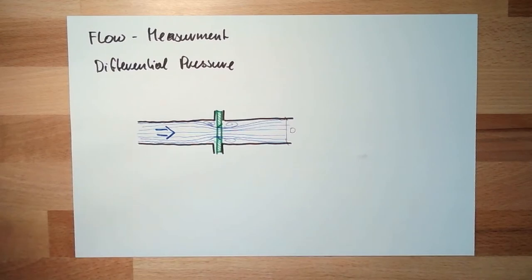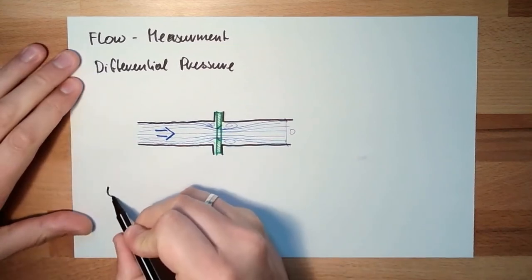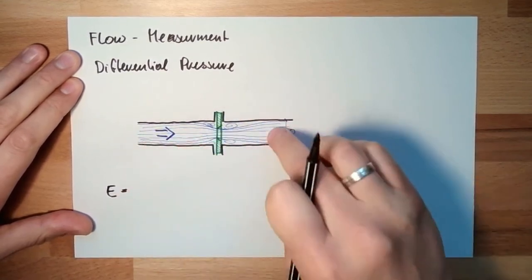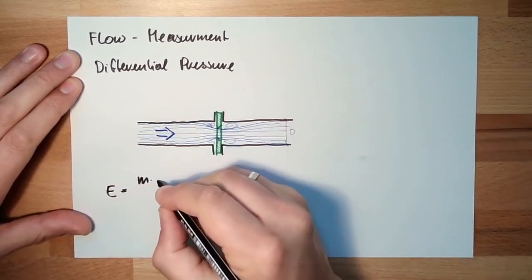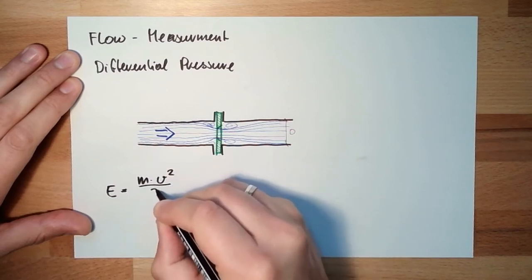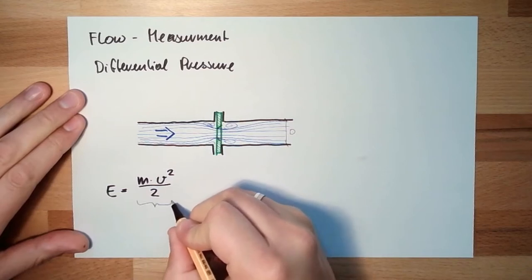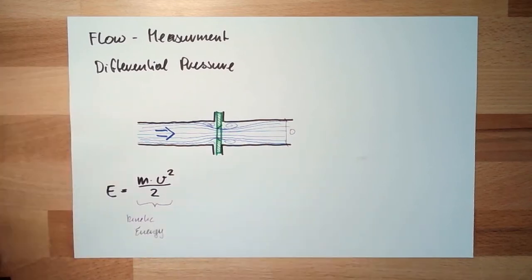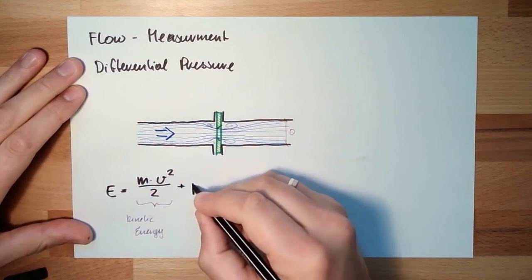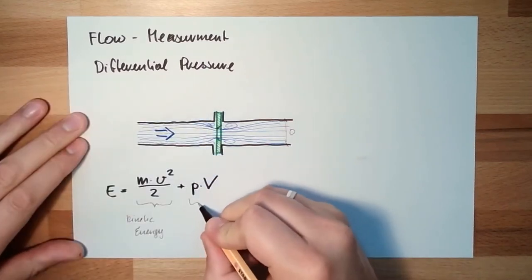You've heard in mechanics something about Bernoulli — the Bernoulli equation. This means the energy stored in a liquid has multiple terms: kinetic energy, which is one-half times mass times velocity squared — that's the movement energy. Then we have pressure energy, which is pressure multiplied by the volume inside.